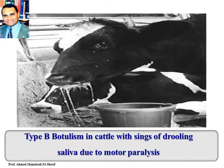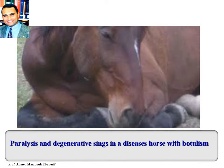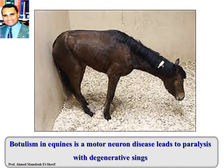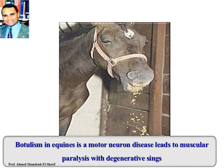Botulism in cattle with signs of drooling of saliva due to motor paralysis. Paralysis and degenerative signs in a horse with botulism taking the typical posture — the animal lies on its brisket with the head turned to one side. Paralysis and excess salivation due to impaired swallowing. A horse with botulism showing motor neuron disease leading to paralysis with degenerative signs; it cannot eat and food comes out from paralyzed lips.